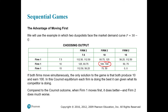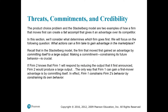The product choice problem and the Stackelberg model are two examples of how a firm that moves first can create a fait accompli — a French term meaning an accomplished fact — giving it an advantage over competitors. In the Stackelberg model, the firm that moves first gains an advantage by committing itself to a large output. Making a commitment that constrains future behavior is crucial.